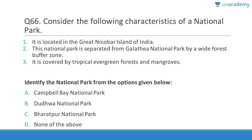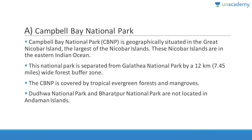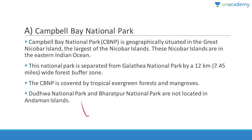Question sixty-six: Consider the characteristics of a national park — it is located in the Great Nicobar Island of India, it is separated from Galathea National Park by a wide forest buffer zone, and it is covered by tropical evergreen forest and mangroves. Answer is A, Campbell Bay National Park. It is located in Great Nicobar Islands, the largest of the Nicobar Islands, in the eastern Indian Ocean. It is separated from Galathea National Park by a 12-kilometer-wide forest buffer zone. Dudhwa and Bharatpur national parks are not in the Andaman Islands.